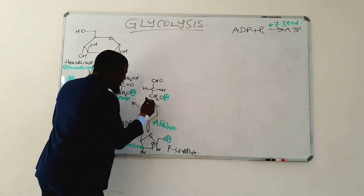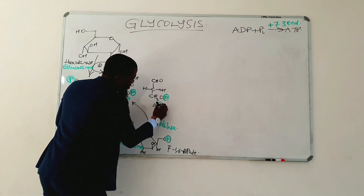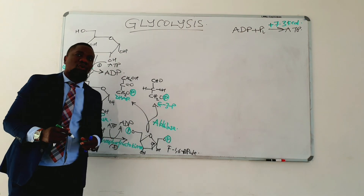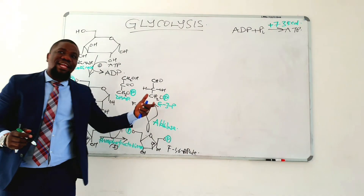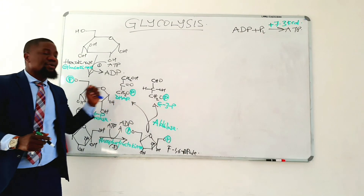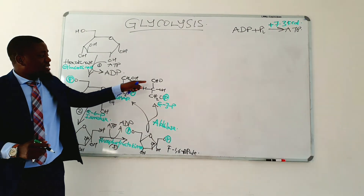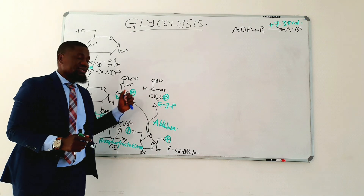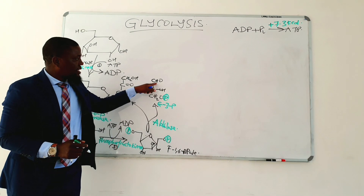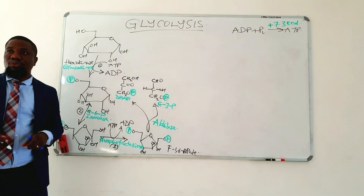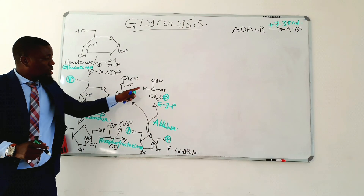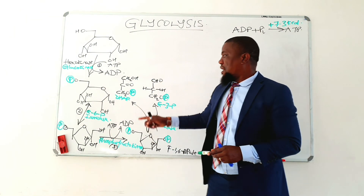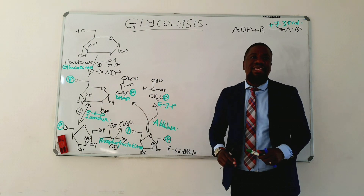This here is glyceraldehyde-3-phosphate. Glyceraldehyde and dihydroxyacetone, without their phosphates, are monosaccharides with free carbons — they are trioses. This here is the aldehyde group, and this here is the ketose group. These two are the triose phosphates that are produced after the work of the enzyme aldolase.